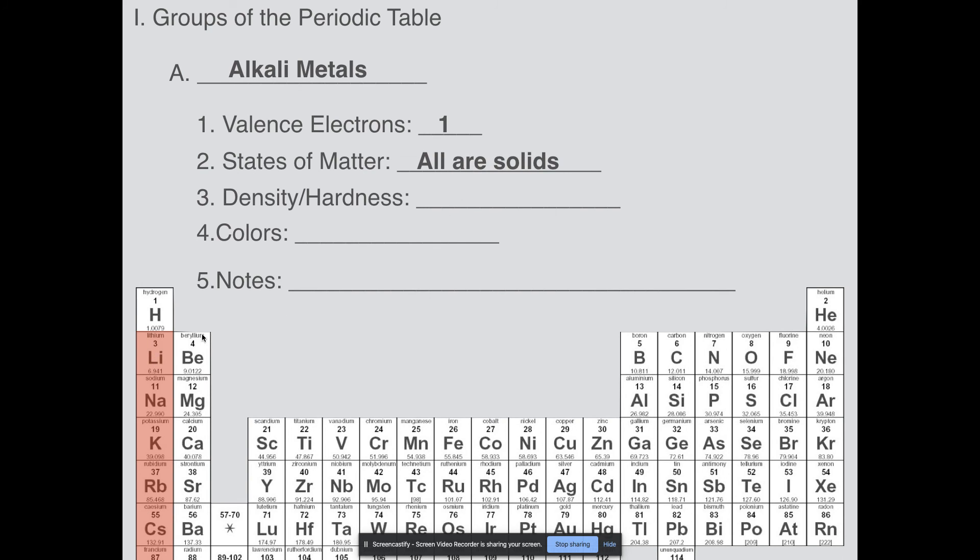States of matter: every single one of them is a solid at room temperature. Their density and hardness: they generally have lower densities. Quite a few of these actually will float on water, so they have a density that's lighter than one gram per milliliter. And their hardness is pretty soft. When we do our demonstration, you'll notice that I'm able to cut lithium and sodium with just a plastic knife. It's pretty easy to cut them apart. Colors: they're all silver and shiny.